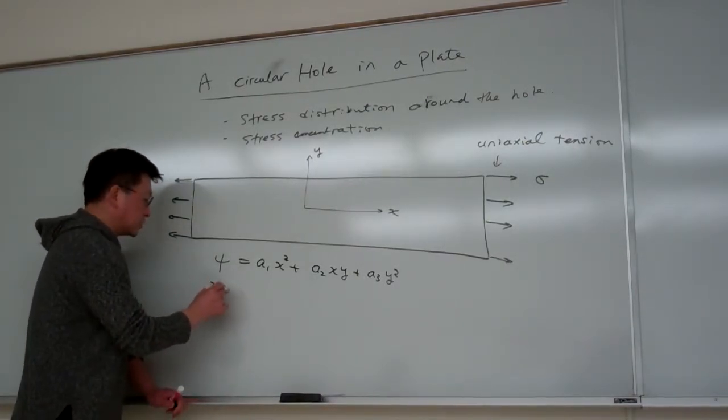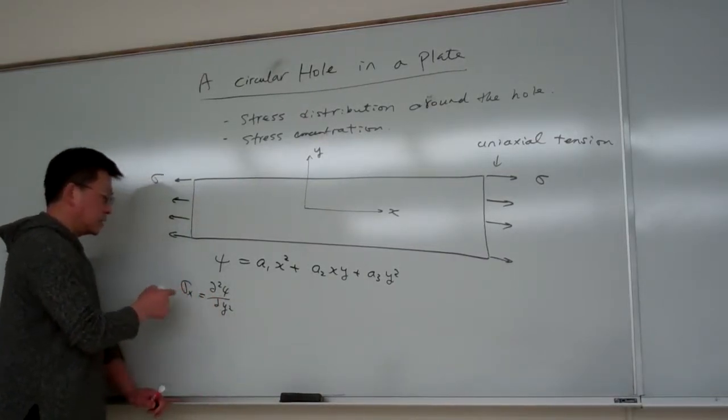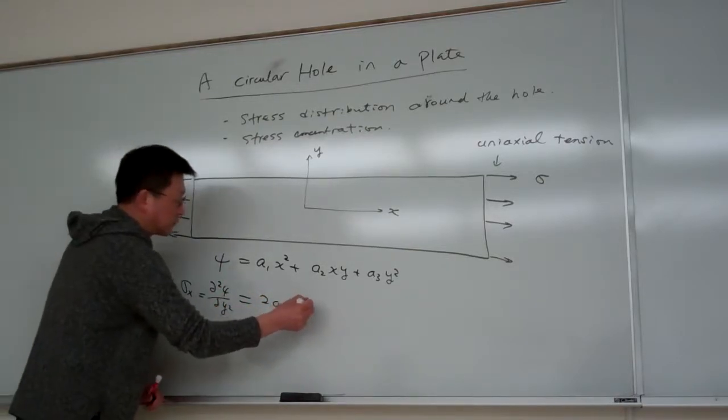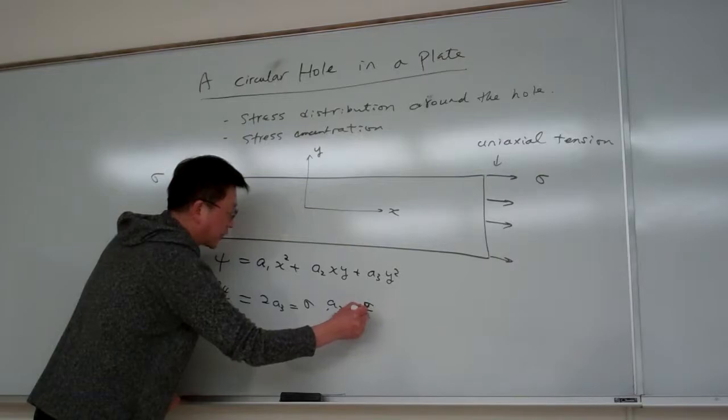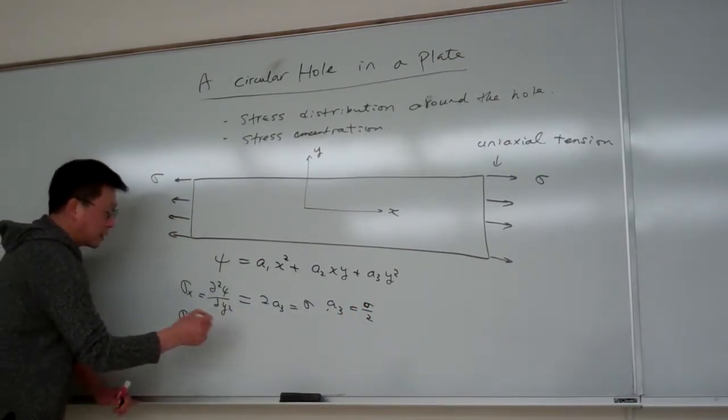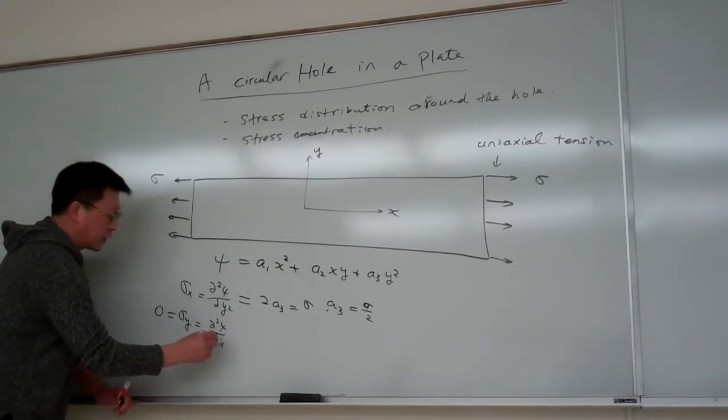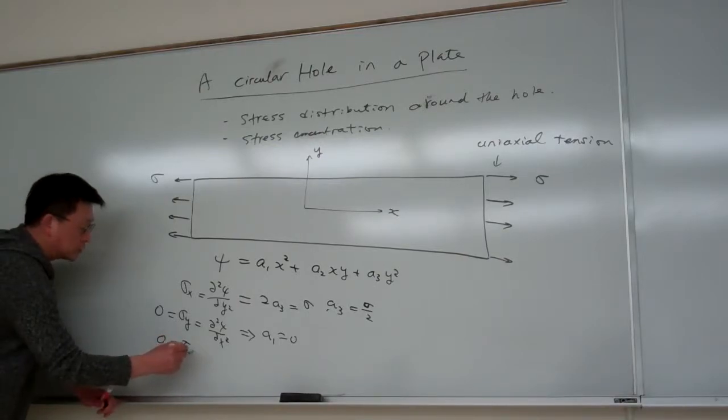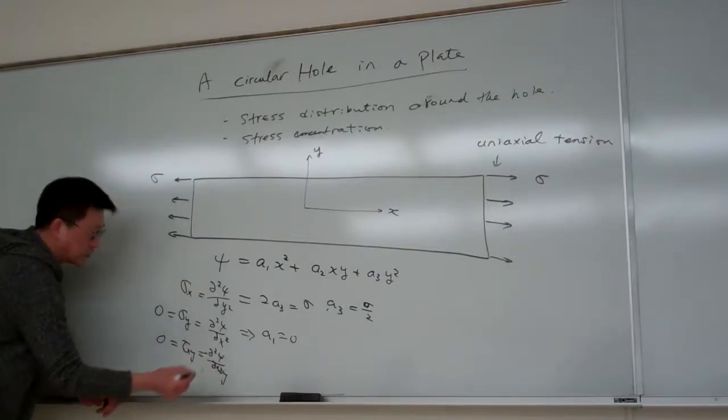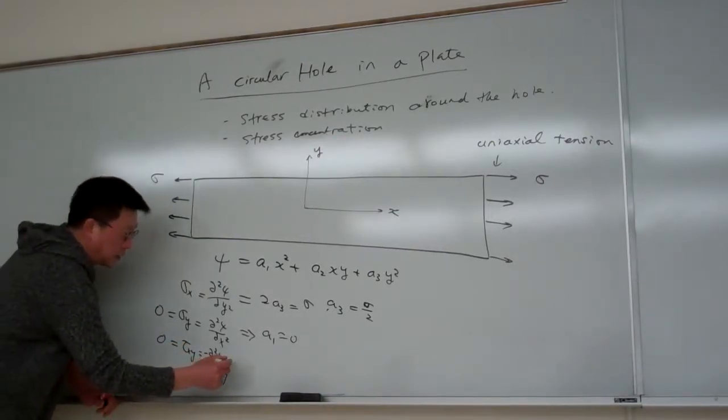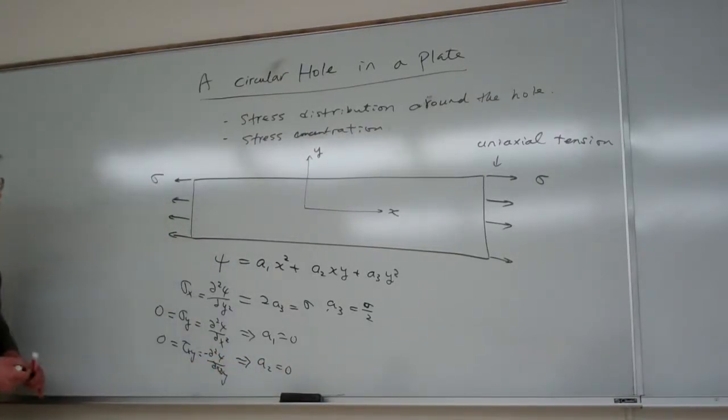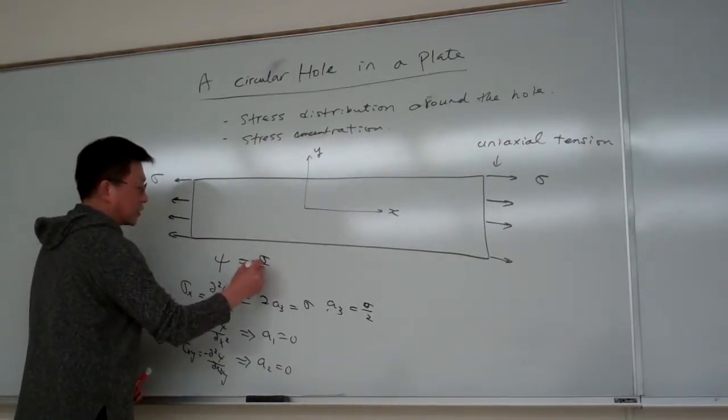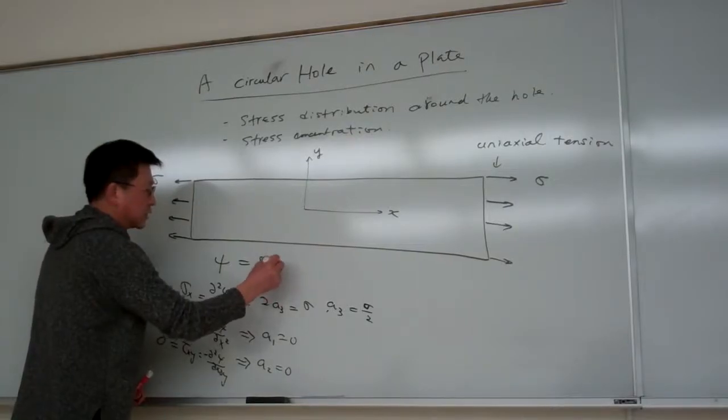Based upon this, we know that the stress sigma x equal to partial phi partial y squared, that gives us stress in x direction. So for this one, that is 2a3, and the given is sigma. From here we can determine that a3 is sigma divided by 2. On the other side, sigma y equal to 0, and that is phi partial x squared. From here we can find a1 equal to 0. And also we have no shear stress, so partial square phi partial x partial y should be minus, and this one will give us equal to 0.